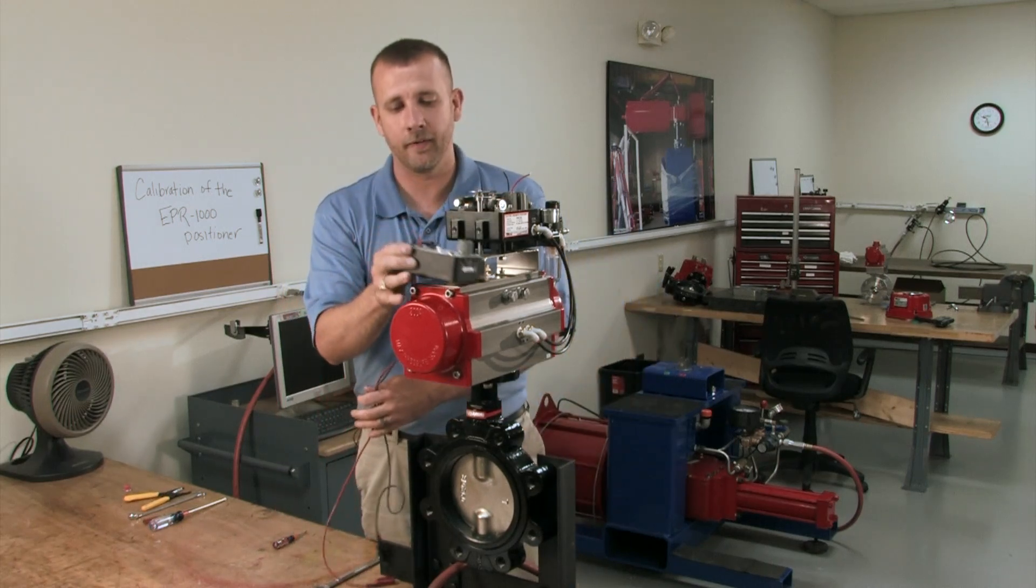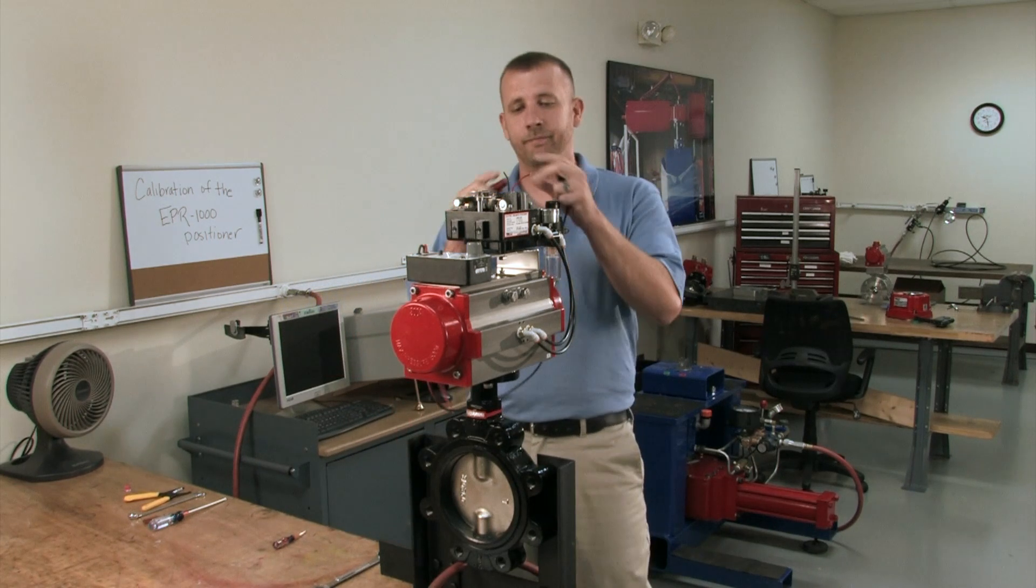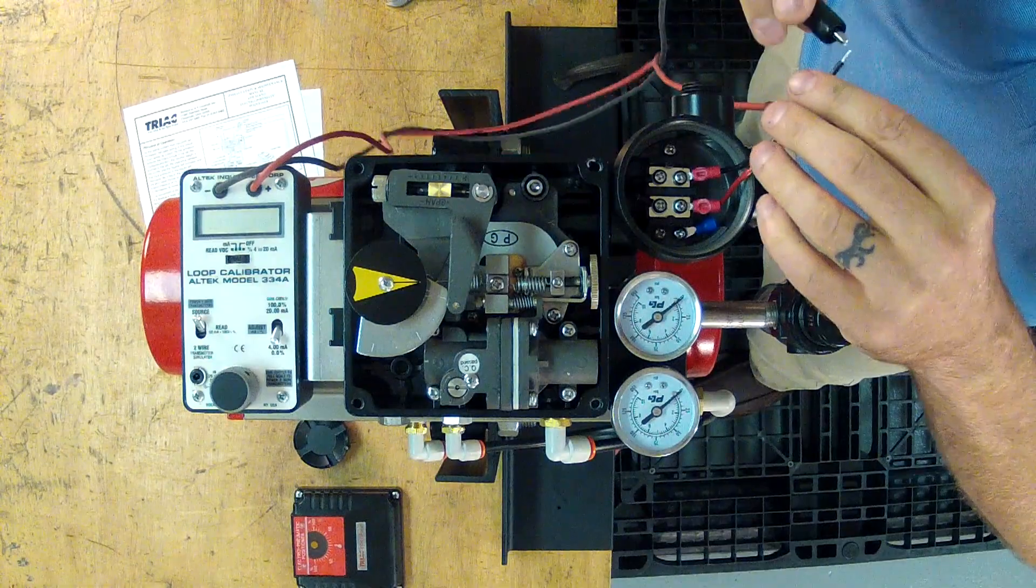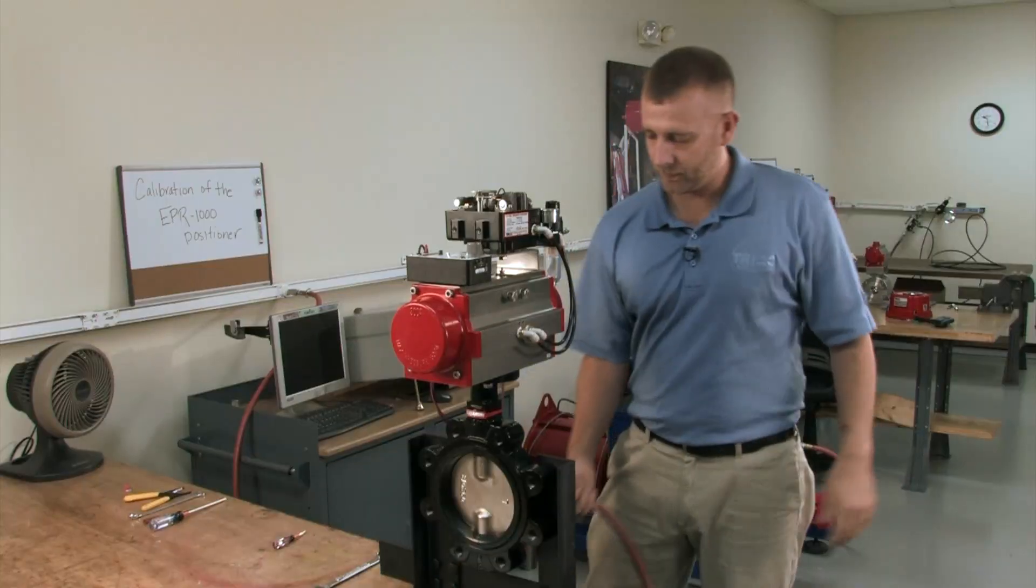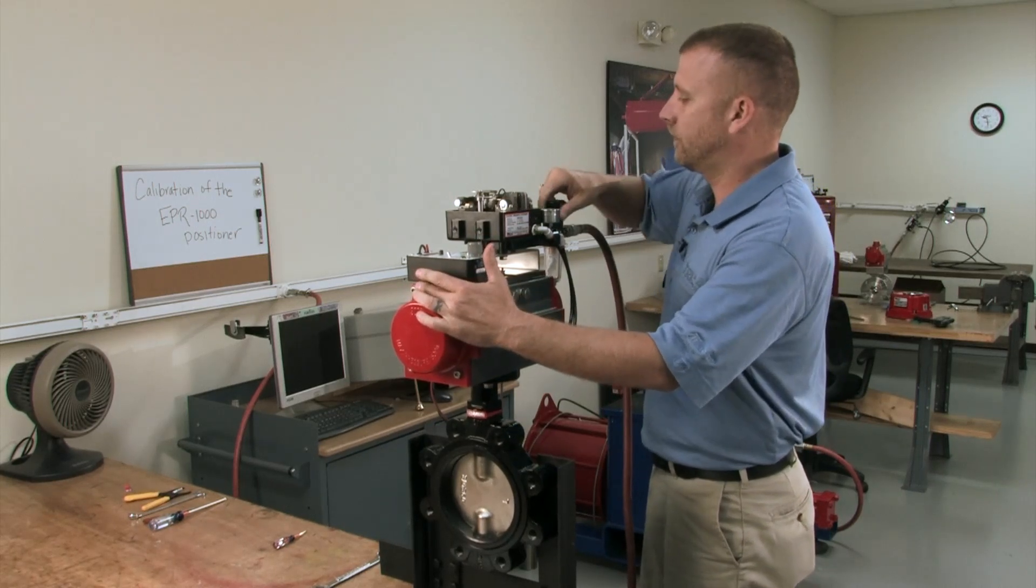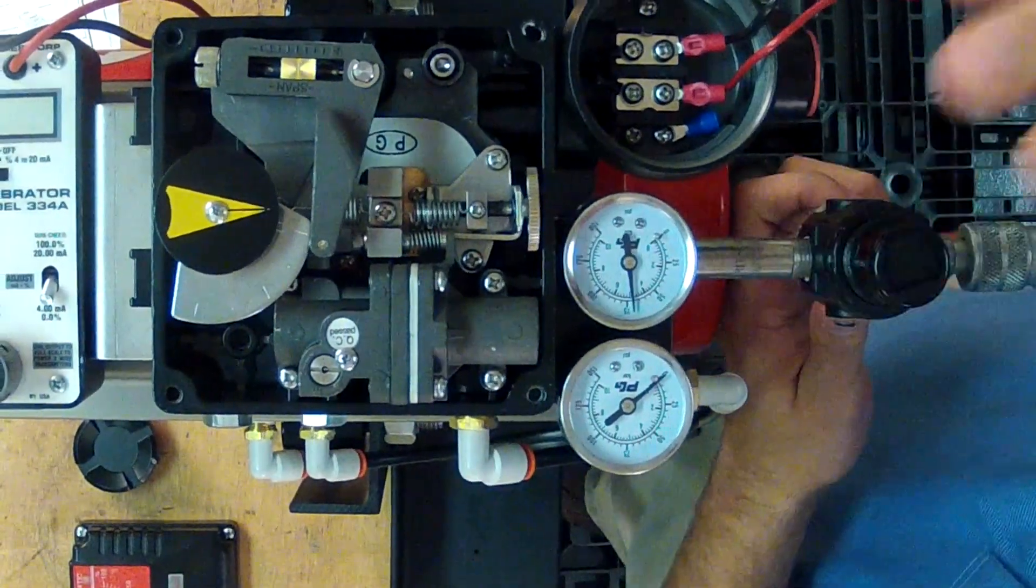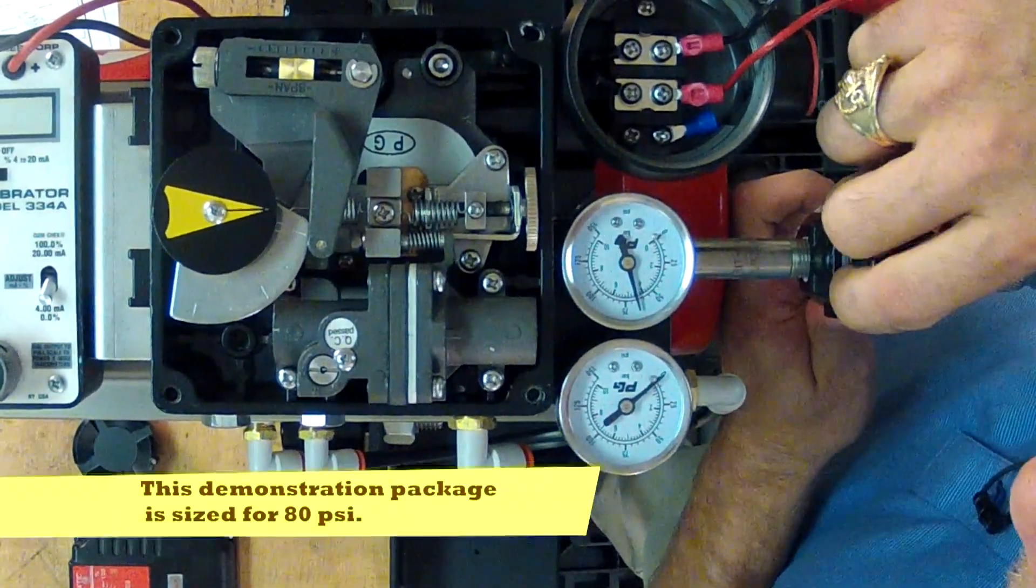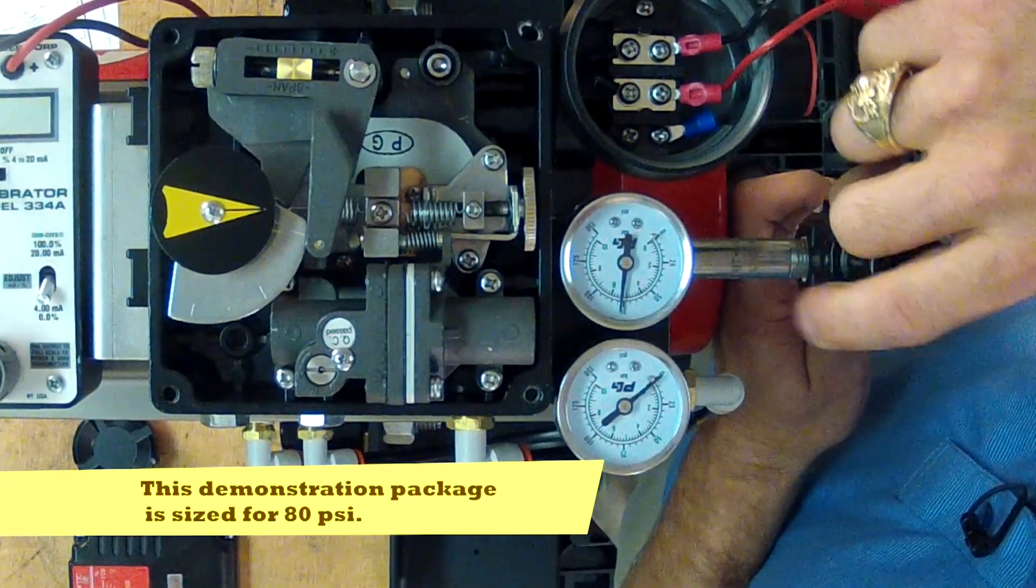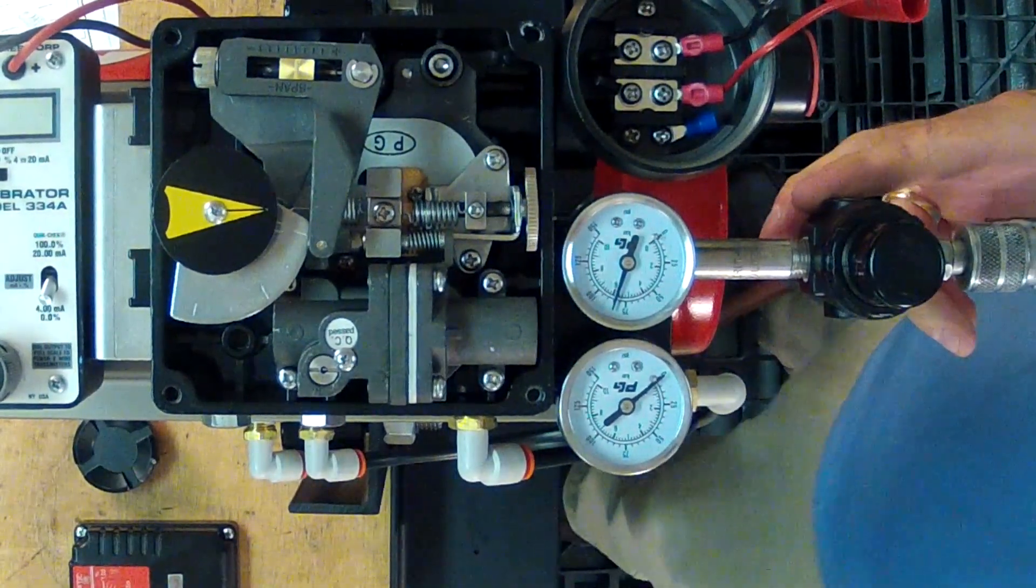4-20 milliamp handheld calibrator. Positive and negative. Now, I'm going to introduce the air on the actuator. We want to set our regulator to approximately 80 PSI. Now, we're going to start the basic calibration procedure.